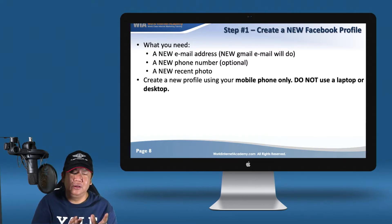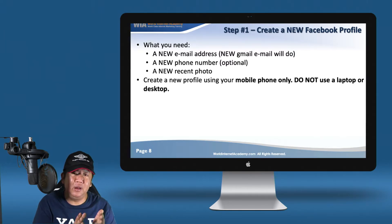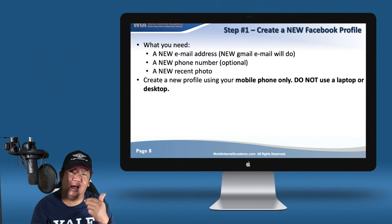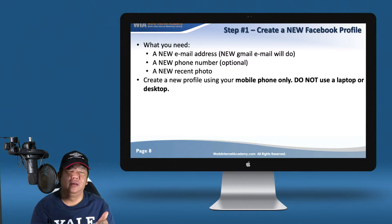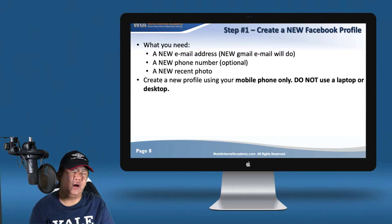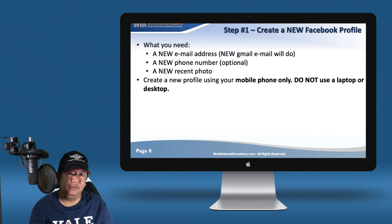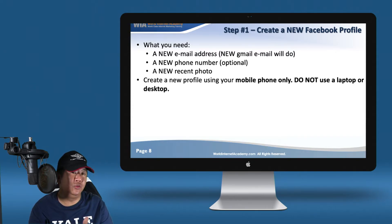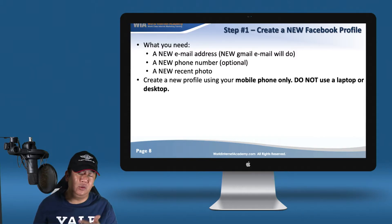As it turns out, when you use a 4G network with a new Gmail account, setting up a Facebook profile on a 4G-enabled mobile phone does not ask you for phone verification, known as PV. But if you go through a laptop, they would almost always ask you to verify a phone number. So if you want to avoid the risk of a PV step — which means you'd need a new phone number — follow what I tell you: use a mobile phone only, don't use a laptop or a desktop.